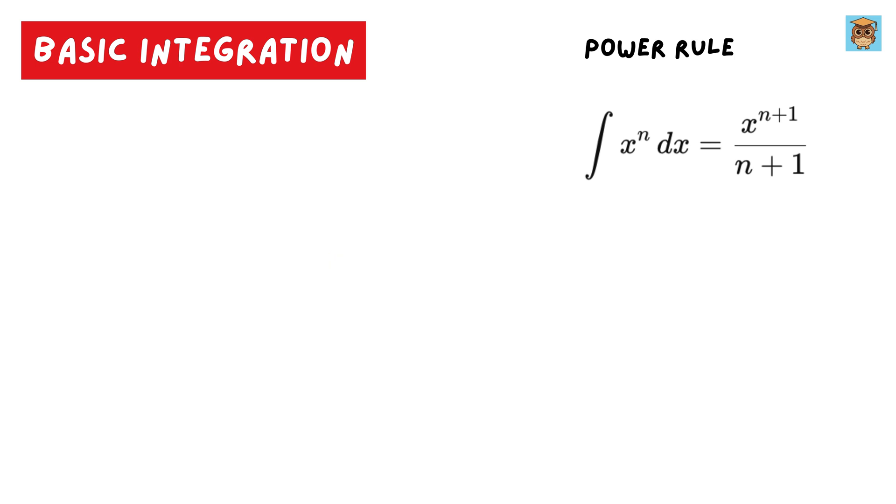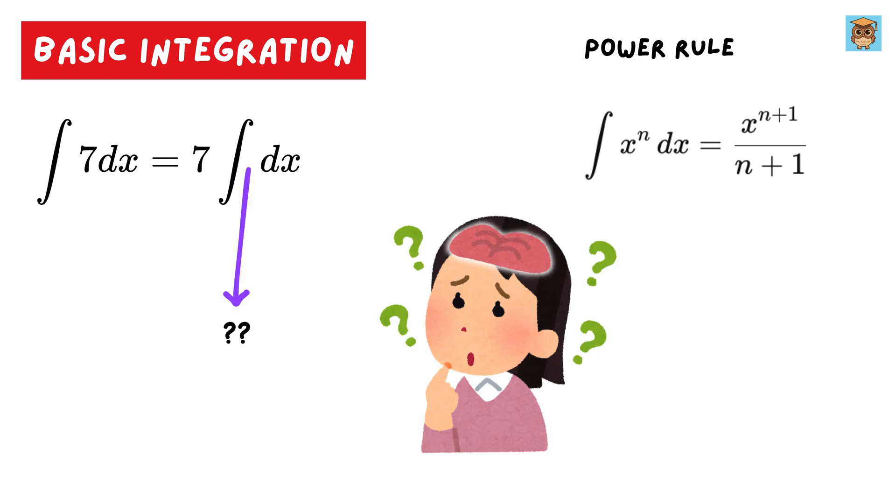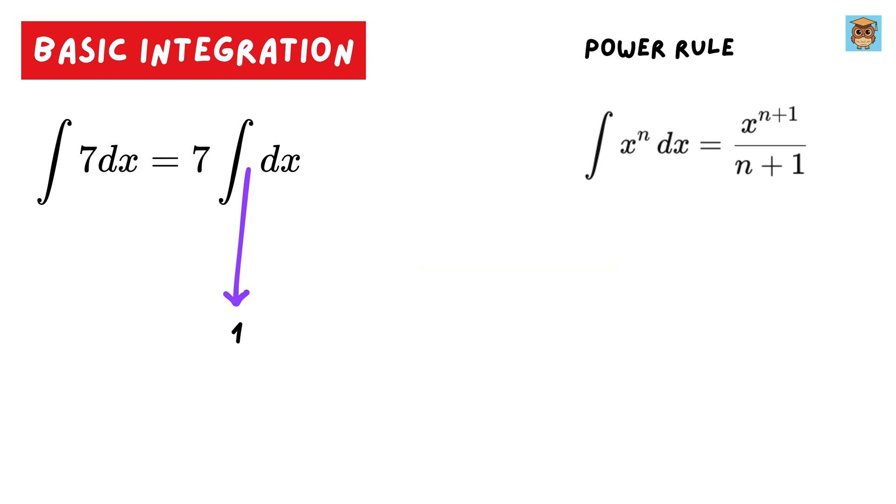Okay, moving on to our next question. Solve this integral. Take 7 outside, and now solve for this. Wait, we don't have anything here? Look properly. We have a 1 here, which can also be written as x raised to the 0 power. So again, using that formula, we get x to the 0 plus 1 over 0 plus 1, or x to the 1, or simply x. Thus, the integral of 7dx is 7x. Don't forget to add this constant c to it.